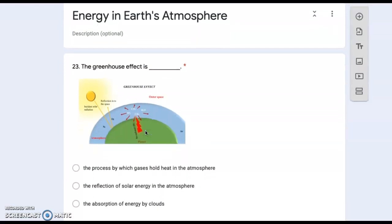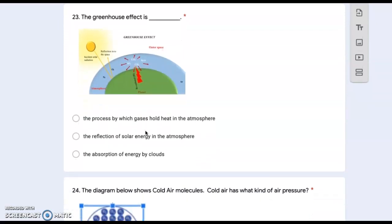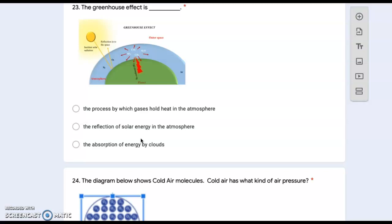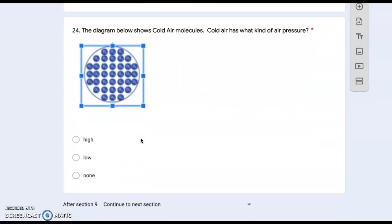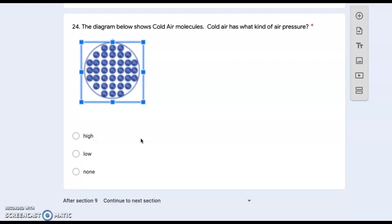Energy in Earth's atmosphere. Twenty-three: the greenhouse effect is the process by which gases hold heat in the atmosphere, the reflection of solar energy in the atmosphere, or the absorption of energy by clouds? Twenty-four: the diagram below shows cold air molecules. Cold air has what kind of air pressure? High, low, or none?